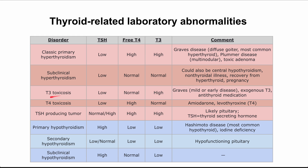Next is T3 toxicosis. As you might expect, T3 is high and TSH is low in response, as the body tries to reduce thyroid activity. This can happen in mild or early Graves' disease, from exogenous administration of T3 hormone — sometimes used for weight loss — or from medications that cause excess T3 release.